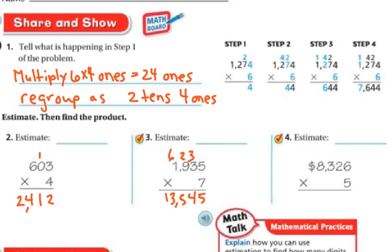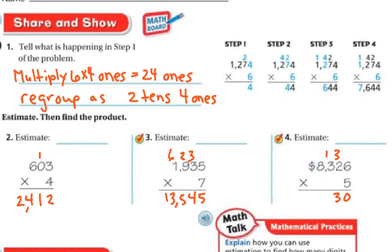Next example: 5 times 6 is 30 — put 0 for the ones and regroup 3 tens. Then 2 times 5 is 10, add the 3 regrouped tens for 13 — regroup again. Now 5 times 3 is 15, plus 1 regrouped is 16 — regroup. Then 5 times 8 is 40, plus 1 thousand regrouped is 41. So the answer is 41,630.